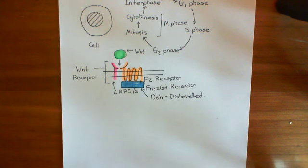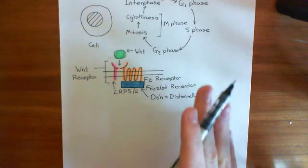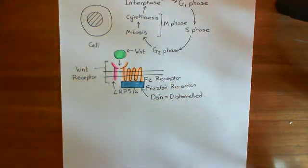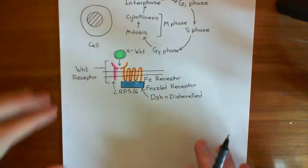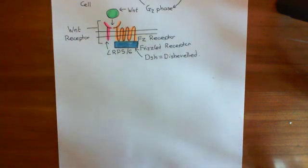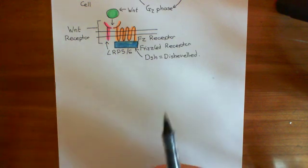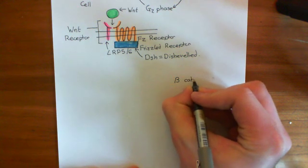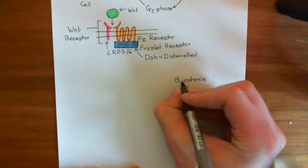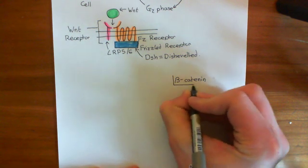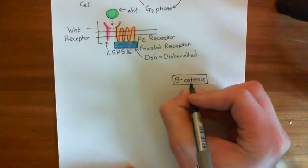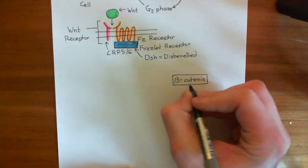To understand the next step in the pathway, we need to take a step back and talk about something known as the beta-catenin destruction complex. In the cytoplasm of cells, there is a protein known as beta-catenin. Beta-catenin has a certain level within the cytoplasm. If beta-catenin goes up, it promotes cell division.